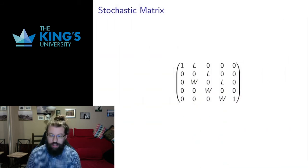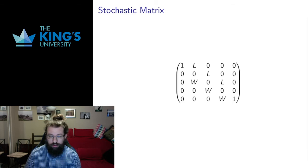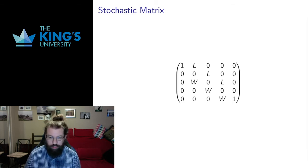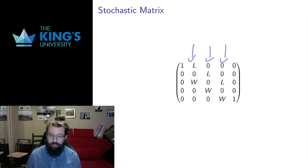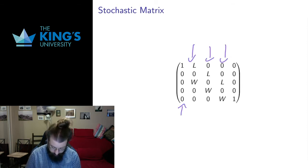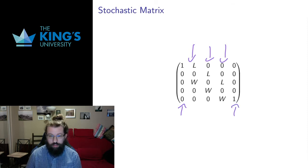That game gives us this stochastic matrix. L is the probability of losing and W is the probability of winning. Each column adds up to one because L plus W equals one, and if we are at zero or we have four stakes, we stay there.